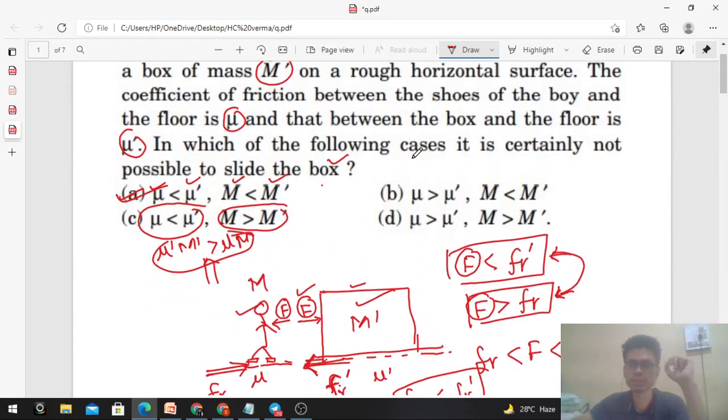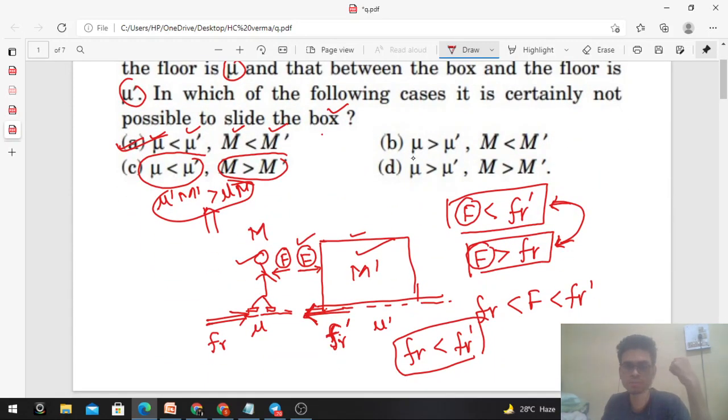If you look at the options above, this matches when μ' is less than μ and M' is also less than M. So this is option D.